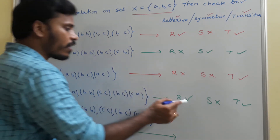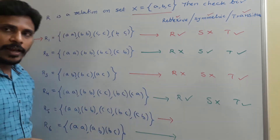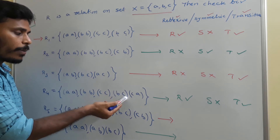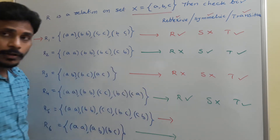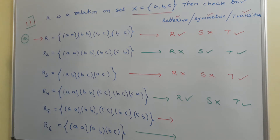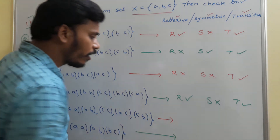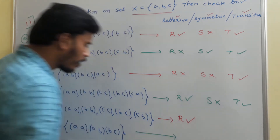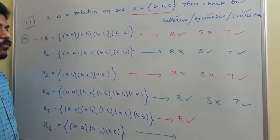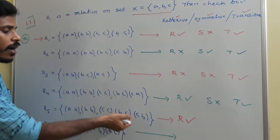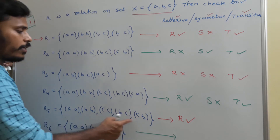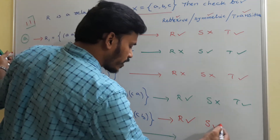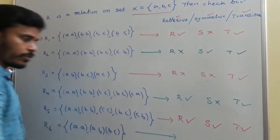For the next relation (r4): (a,a), (b,b), (c,c) are there — reflexive. (b,c) is there but (c,b) is not, so not symmetric. And it is also transitive. For r5: (a,a), (b,b), (c,c) are given — reflexive. (b,c) and its interchange (c,b) are both there, so it is symmetric. It is also transitive. So r5 is reflexive, symmetric, and transitive.